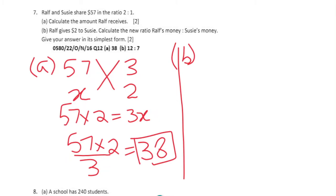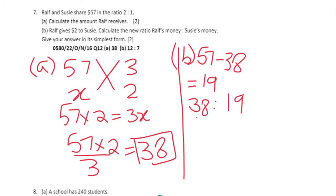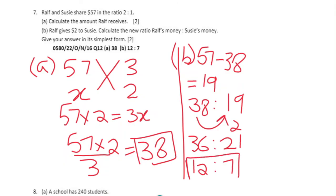Part b: Initially Susie's share was 57 minus 38, which is $19, so the initial share was 38:19. Ralph gives $2 to Susie, so the new share is 36:21. Give the answer in simplest form — divide both by 3 — and we get 12:7.